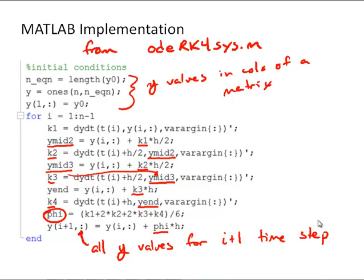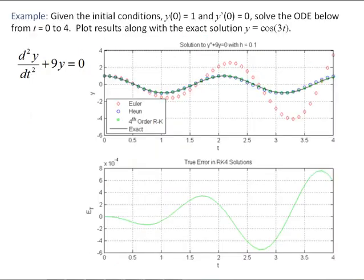So I've supplied that m-file for you, so you will want to make sure that you step through it and understand how it's working. And I've also supplied an example m-file applying the fourth order Runge-Kutta along with Heun's method and Euler's method to the same differential equation we looked at previously, the second derivative of y with respect to t plus 9y equals 0. And that has the analytical solution of y equals cosine of 3t. And here we can look at those results.